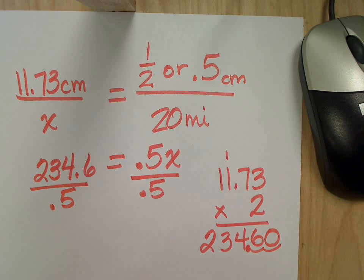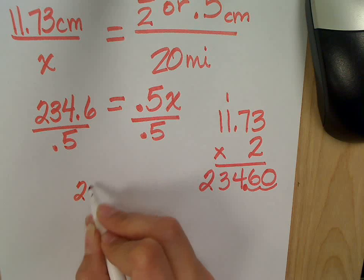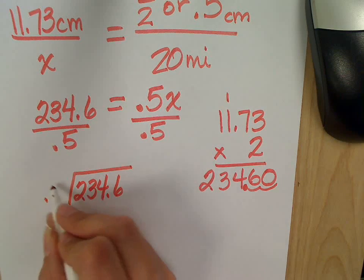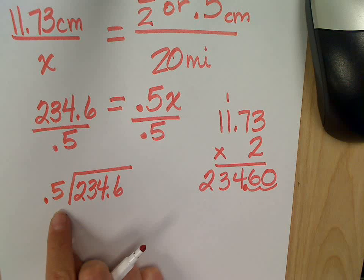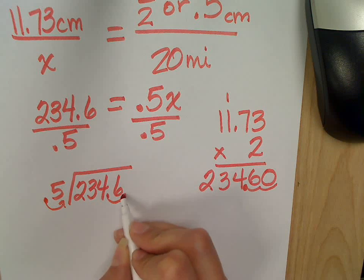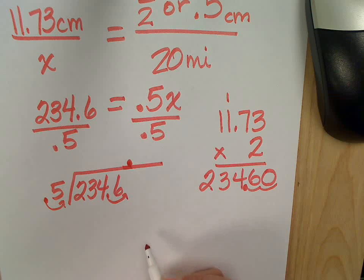And then we can work it out. Which number goes inside? 234.6. Good. What's my rule about having a decimal here on the outside? Yeah, make it a whole number. So I'm going to move it over once. I have to do the same thing to this one. And I'm going to take it up into my answer, so don't forget.